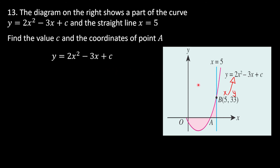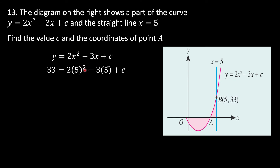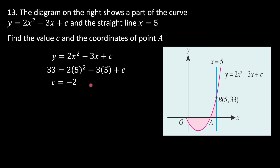We substitute the coordinates of B into the equation. With y = 33 and x = 5: 2(5²) - 3(5) + c = 33 → 50 - 15 + c = 33 → 35 + c = 33 → c = -2. So the y-intercept is -2.